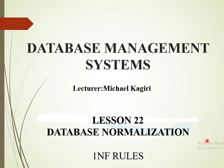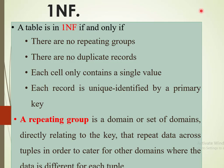Hello and welcome to our next lesson. We are still on database normalization and today we are going to be looking at 1NF rules. For us to state that a particular relation is in 1NF, there are certain rules it has to abide with. Rule 1: no repeating groups. Rule 2: no duplicate records. Rule 3: each cell should only have one value. Rule 4: every record must be unique.